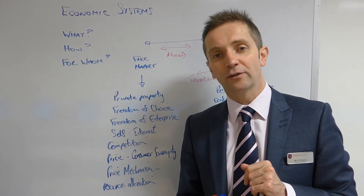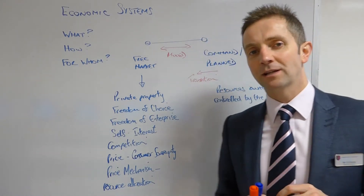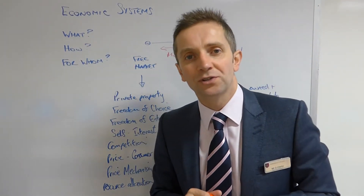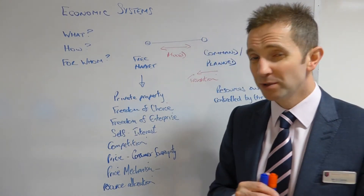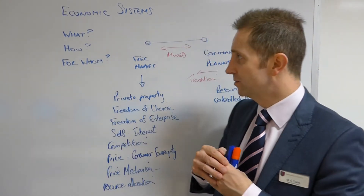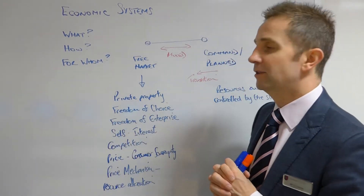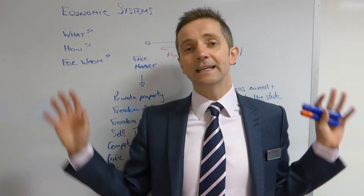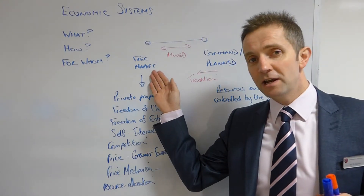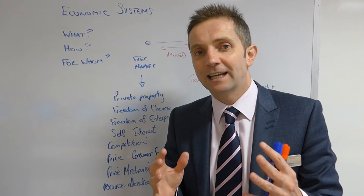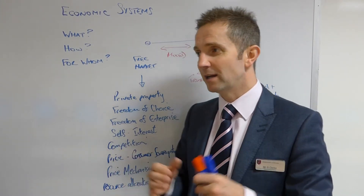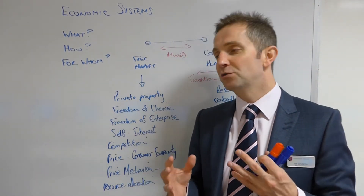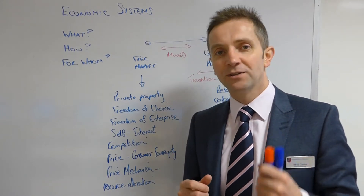Before we get started, let's not forget the three main things that any economic system is attempting to answer. The three key questions are: number one, what goods to produce and in what quantities? Number two, how should the various goods and services be produced? And number three, for whom should the various goods and services be produced? You'll know that there is a spectrum of economic systems ranging from the free market, where all allocation of resources is done by the market forces of demand and supply, and then we have the command economy, the planned economic system, where everything is owned and controlled by the state.